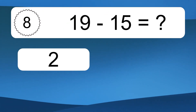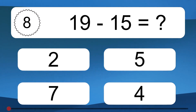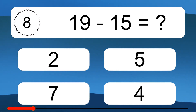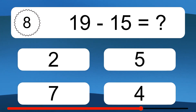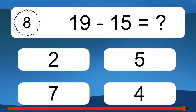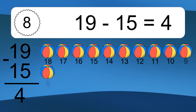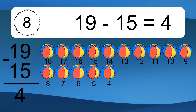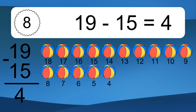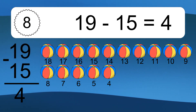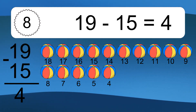19 minus 15 equals what? 19 minus 5 equals 4. Let's count it: 18, 17, 16, 15, 14, 13, 12, 11, 10, 9, 8, 7, 6, 5, 4.